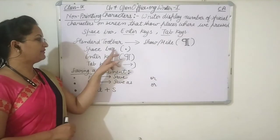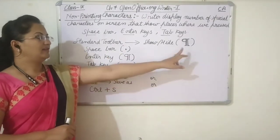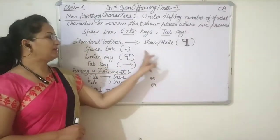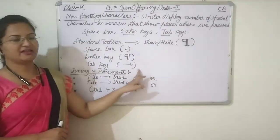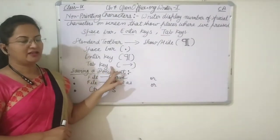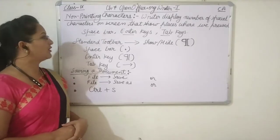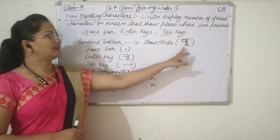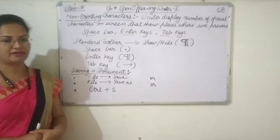So wherever we have used these three keys, when we click on this button, we will be able to see these symbols in place of those keys. When we don't want to see non-printing characters, we can again click on the Hide button.